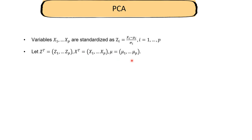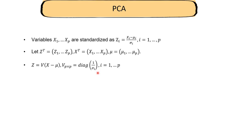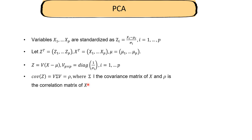A more concise way to represent z is: z equals V times (x minus mu). V is a p-by-p diagonal matrix where all diagonal elements are 1/sigma — the inverse of the standard deviations. Since x is p-by-1 and mu is p-by-1, all dimensions match. This is just a concise way of rephrasing the standardization statement. So z contains all the standardized variables.